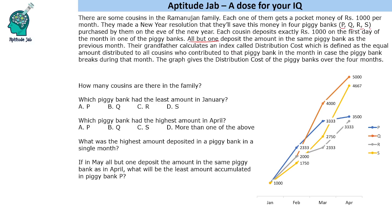Their grandfather calculates an index called distribution cost. It is defined as the equal amount distributed to all cousins who contributed to that piggy bank in the month, in case the piggy bank breaks during that month. So if some amount is deposited in a bank and that bank breaks, all people who deposited will get that same amount. For example, if distribution cost is 4000 and bank Q breaks in March, all people who deposited in that bank will get 4000 each.